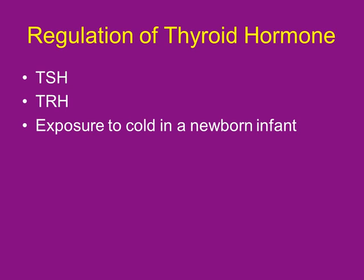The example of testosterone: if somebody takes artificial testosterone, their level goes way over — maybe 200 or 300 times more than naturally present — which tells the hypothalamus it's way too high, and it shuts off. Things that regulate thyroid hormone include the hormones themselves, and exposure to cold — especially in newborn infants, but to a smaller extent in adults as well.